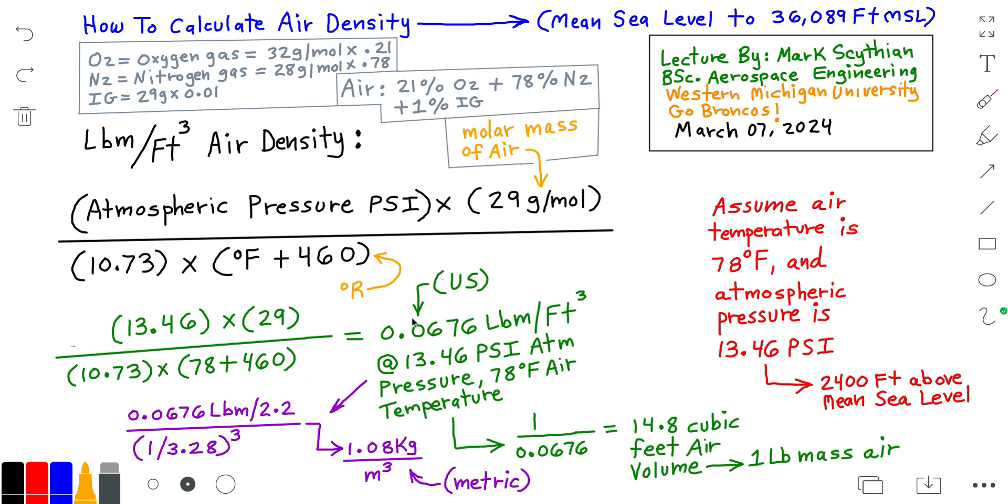Assume the air temperature at a given location is 78 degrees Fahrenheit, and the atmospheric pressure is 13.46 PSI.